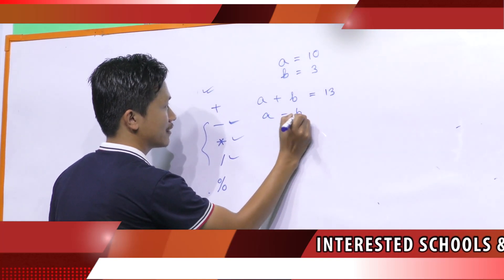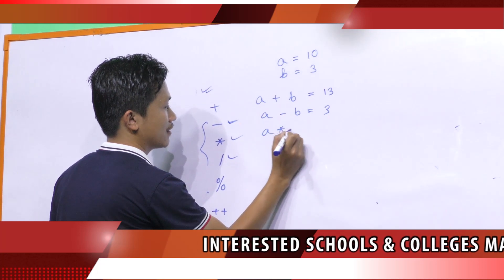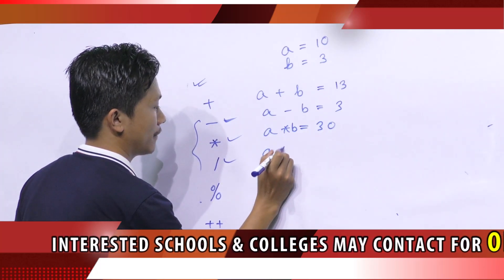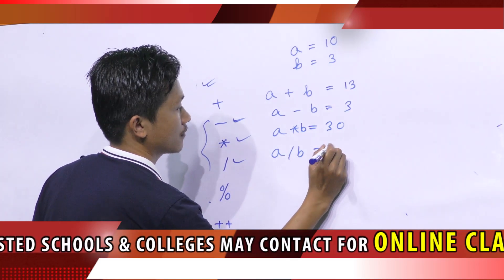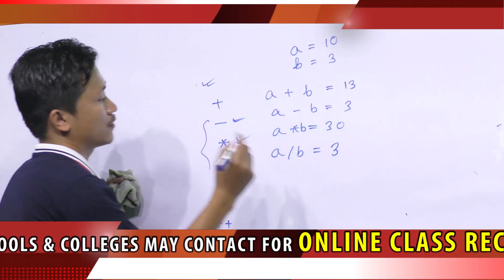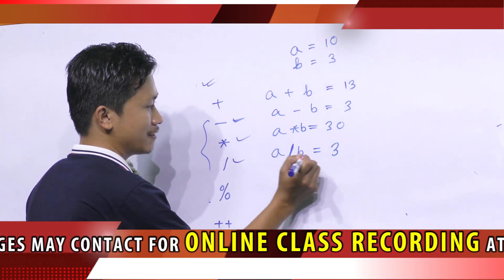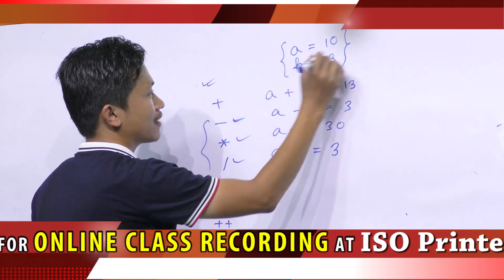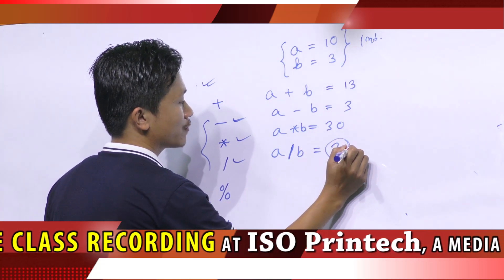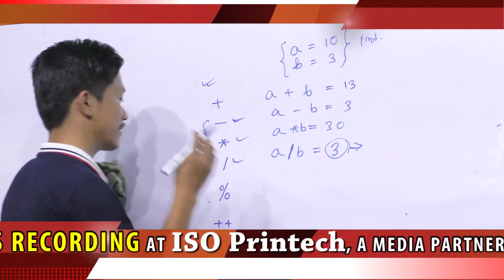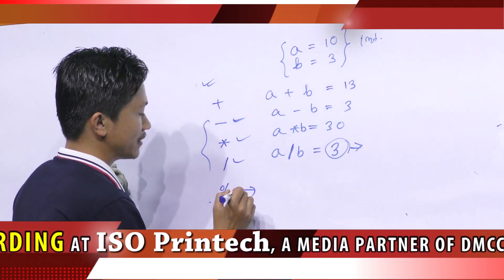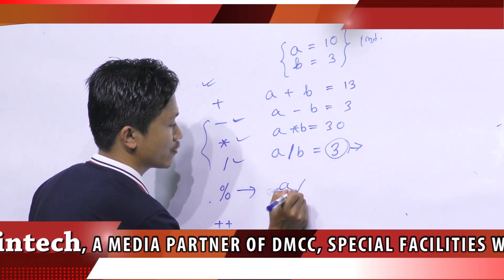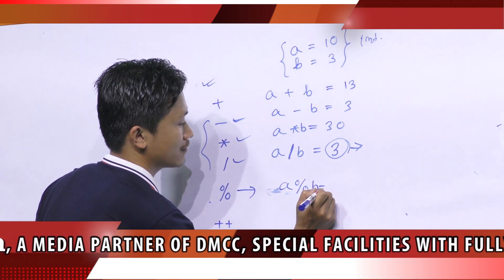A minus B will return the value 7. Note that A divided by B will return only 3, because these two variables are of type integer, so the result will also be integer — the decimal part will be truncated. The modulo operator returns the remainder after integer division, so A modulo B will equal 1.